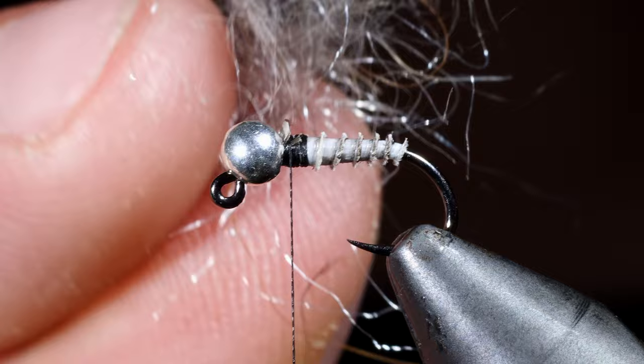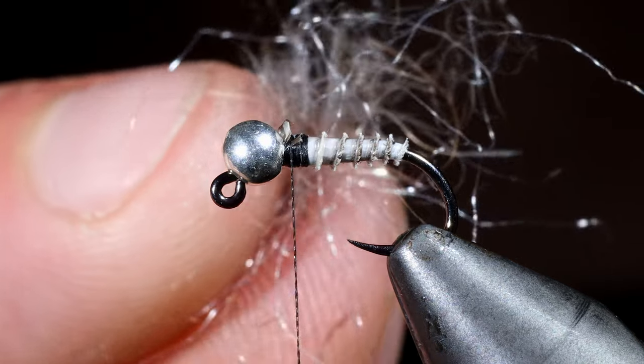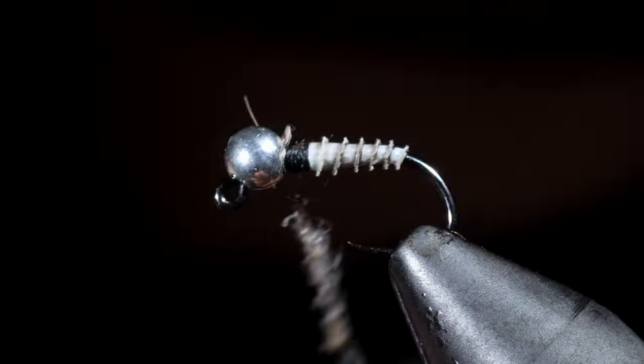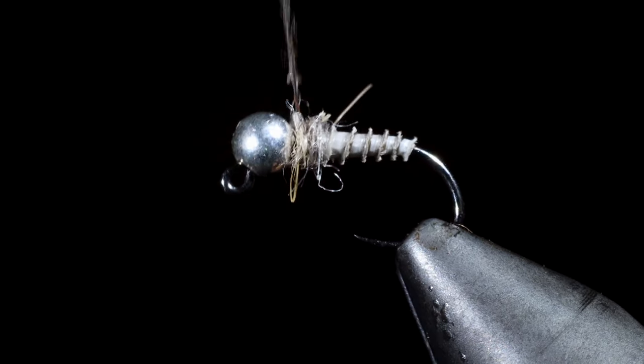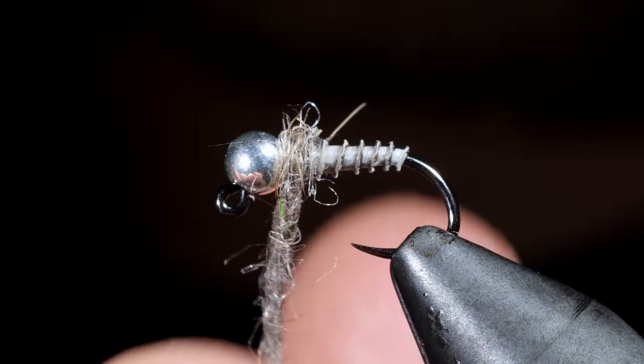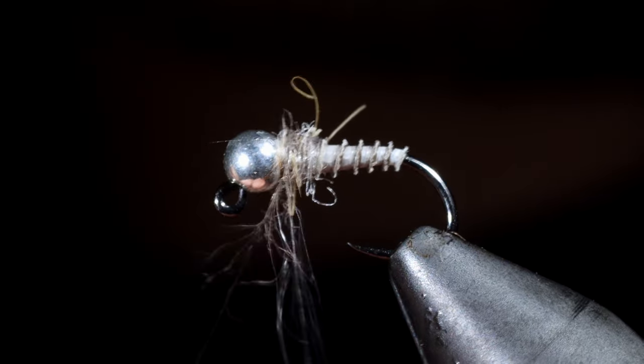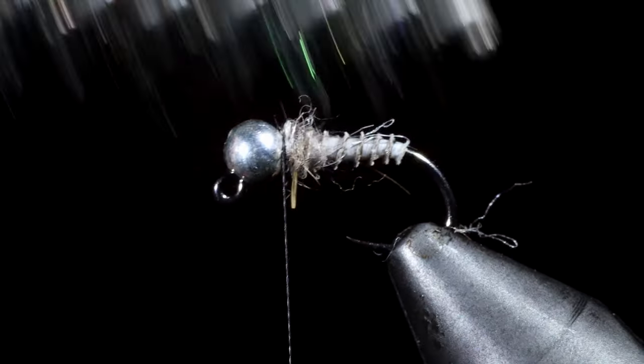Next we'll grab some gray or natural hare's ear dubbing. Create a dubbing noodle and wrap that onto the biot as well as a thread base towards the head of the fly. Pull any excess free and brush our dubbing out giving it a nice buggy look.